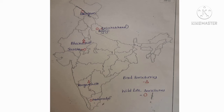Next, Wildlife Sanctuaries. First one, Sariska Wildlife Sanctuary is in Rajasthan. Mudumalai Wildlife Sanctuary is in Tamil Nadu. Rajaji Wildlife Sanctuary is in Uttarakhand. Dachigam Wildlife Sanctuary is in Jammu and Kashmir.